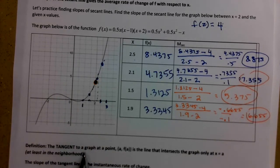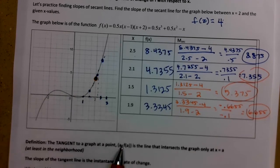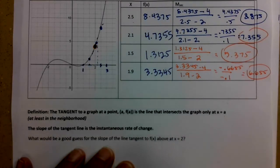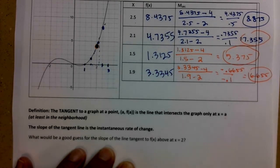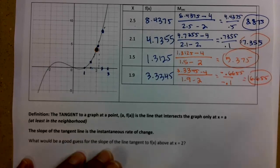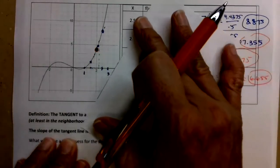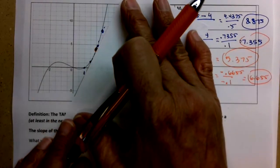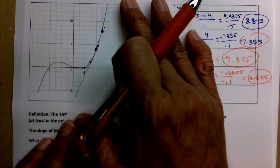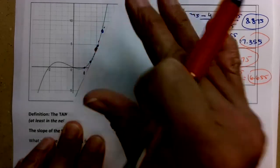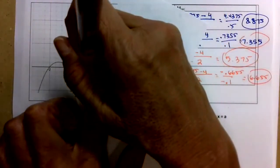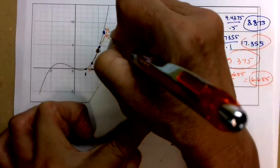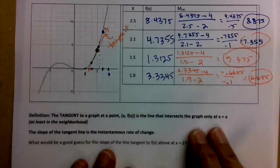So the definition, the tangent to a graph at a point (a, f(a)), is the line that intersects the graph only at x equals a. And by only, I mean just like kind of in that neighborhood. So up here at 2, on the graph that we have, if I wanted to find the tangent line, I would be looking for the line that kind of just comes in and intersects my graph once, just there at x equals 2. So not between two points, but just touches it once right there at x equals 2. So we'd be trying to come up with whatever that line is. This in orange that I'm drawing would be the tangent line. And we would want to somehow find that slope.